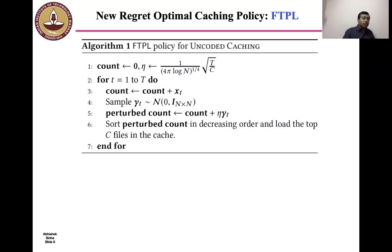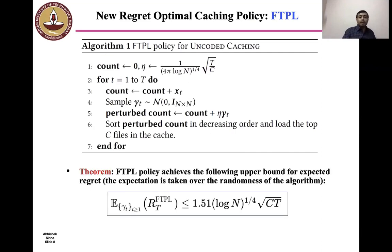We prove the proposed FTPL policy is sub-linear in regret. The expected regret is bounded by the following. That is, we show that the expected regret of the FTPL policy over an interval of length T is upper bounded by 1.51 log(N)^(1/4) √(CT). The proof uses a recent result by Cohen et al and it is given in the paper.